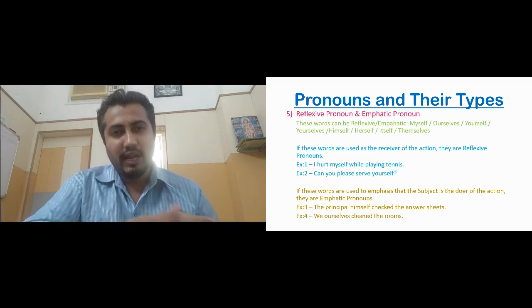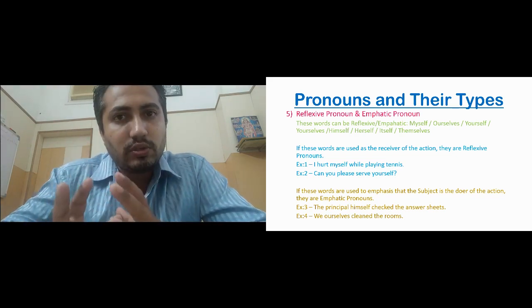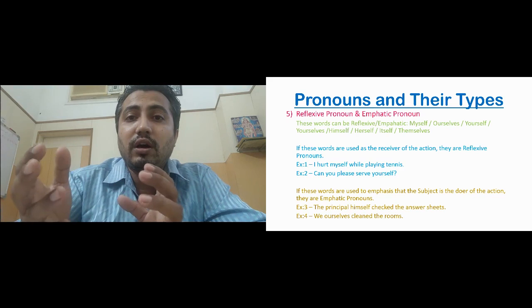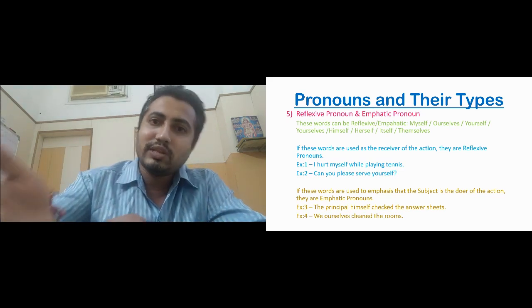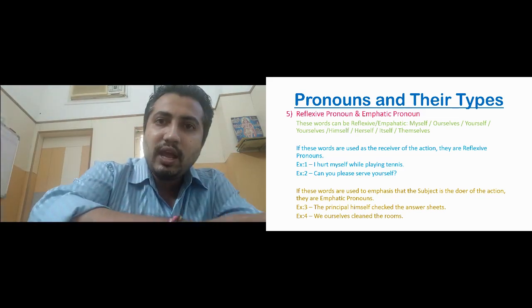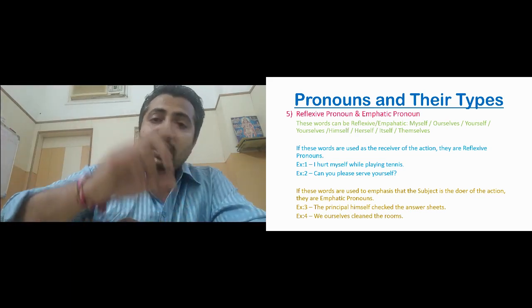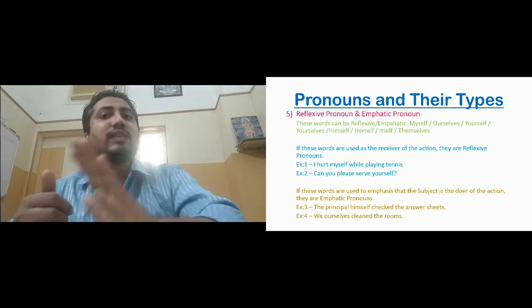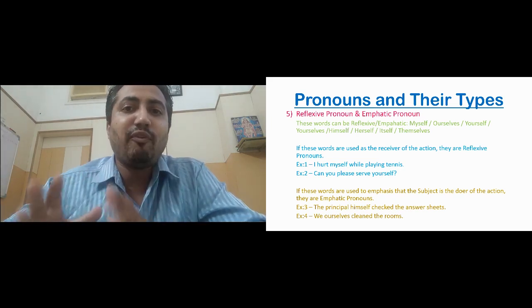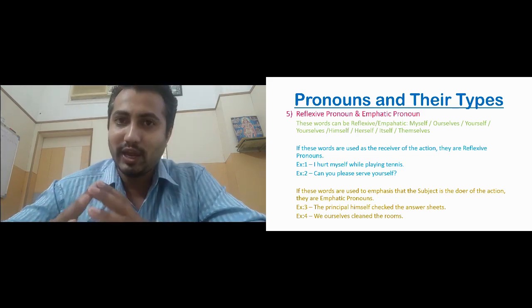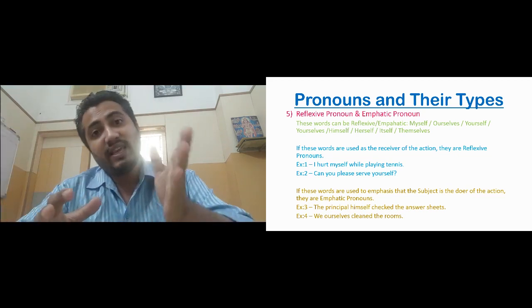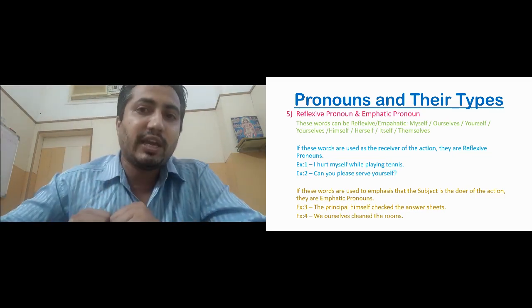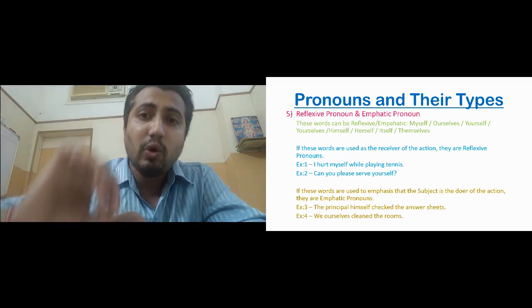The difference is in the way they are used. If the self-pronouns are used as an object — the receiver of the action — they are called reflexive pronouns. We discussed object in the first video: pronoun used as a subject is the doer, pronoun used as an object is the receiver. If these self-pronouns are used as the object, with the action done on them, then they are called reflexive pronouns.